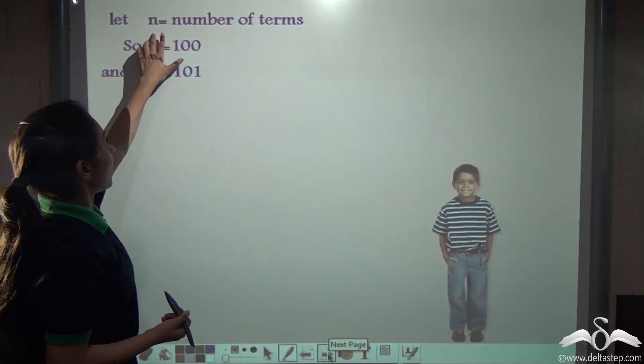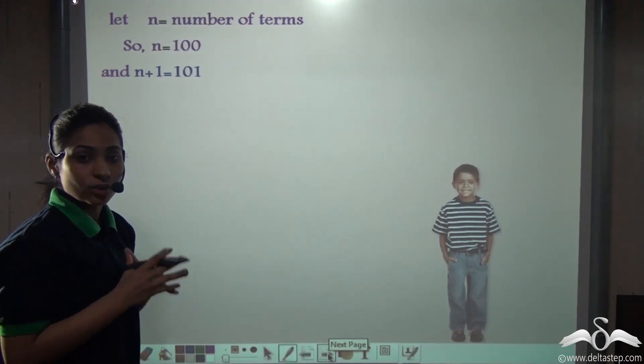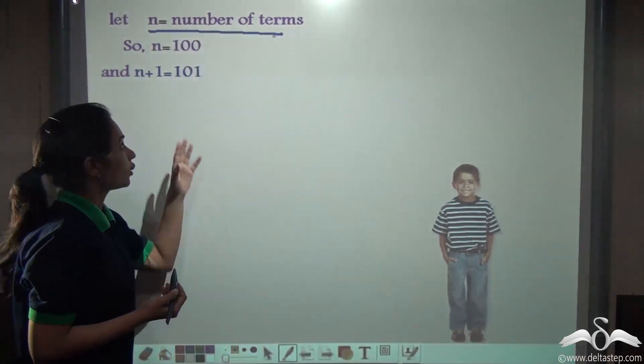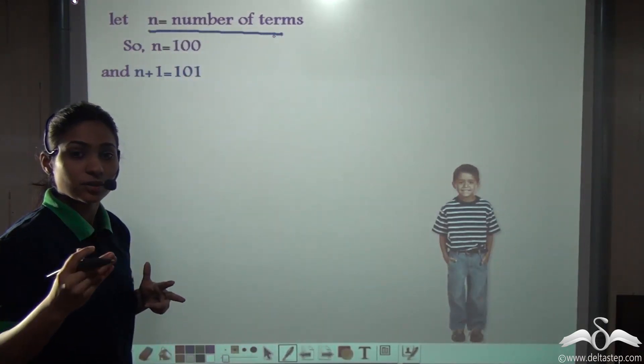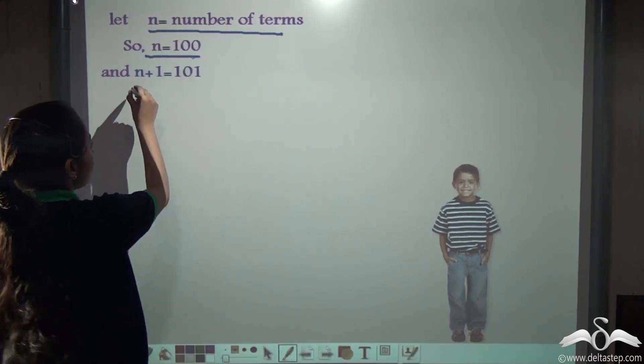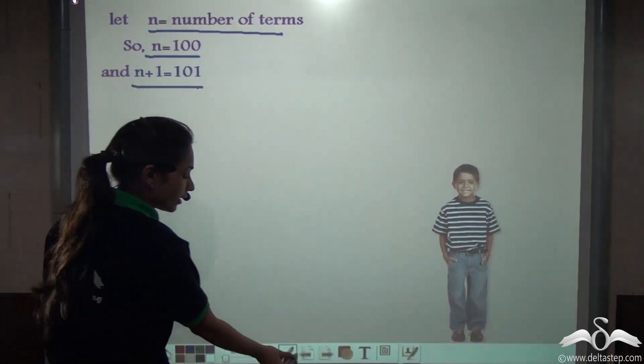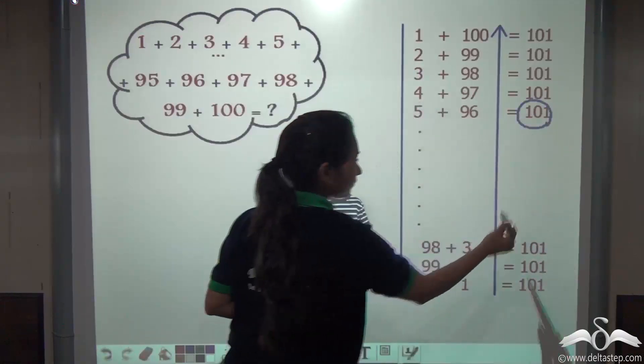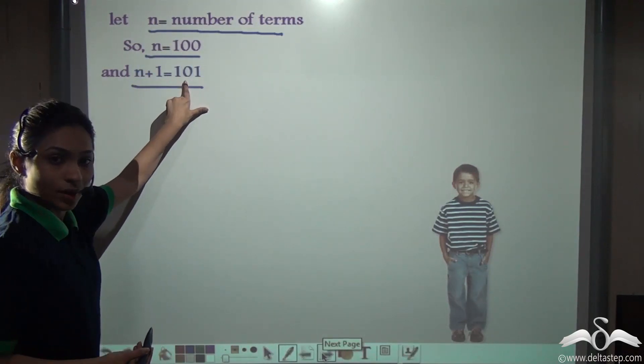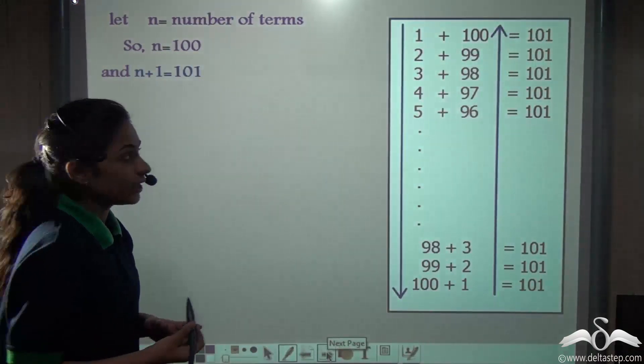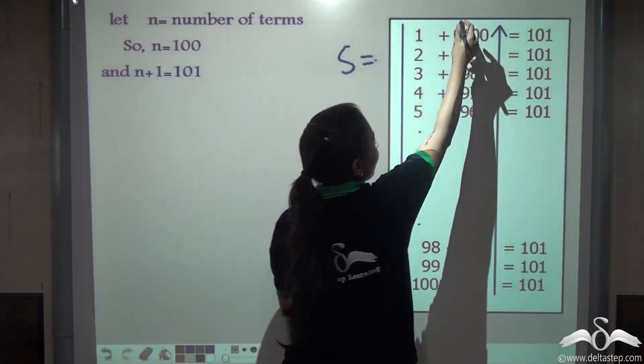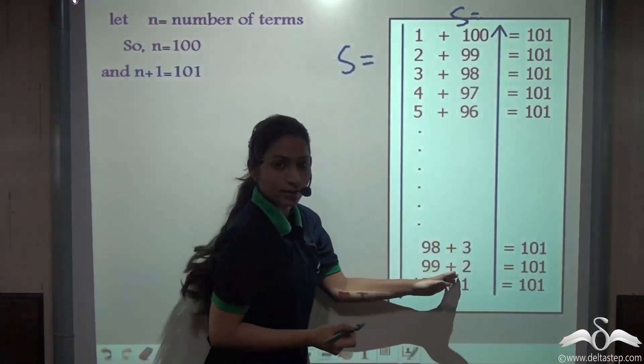If we take n as the number of terms, we have to find the sum of first 100 natural numbers. So here n is 100. If n is 100, then n plus 1 is 101. We are calculating the sum from 1 to 100 and adding it again from 100 to 1, which is the same thing.